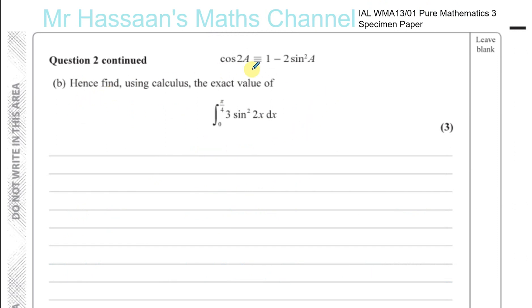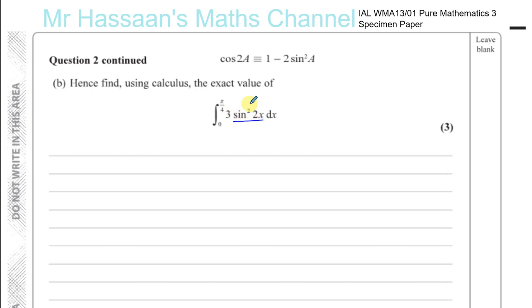Part B says 'hence' — meaning using what we just did — find using calculus the exact value of the integral of 3 sine squared 2x with respect to x. What we need to do here is change this into a form that we can integrate with respect to x. We cannot integrate sine squared directly — we have to rearrange it into a form that doesn't involve a squared trigonometric function.